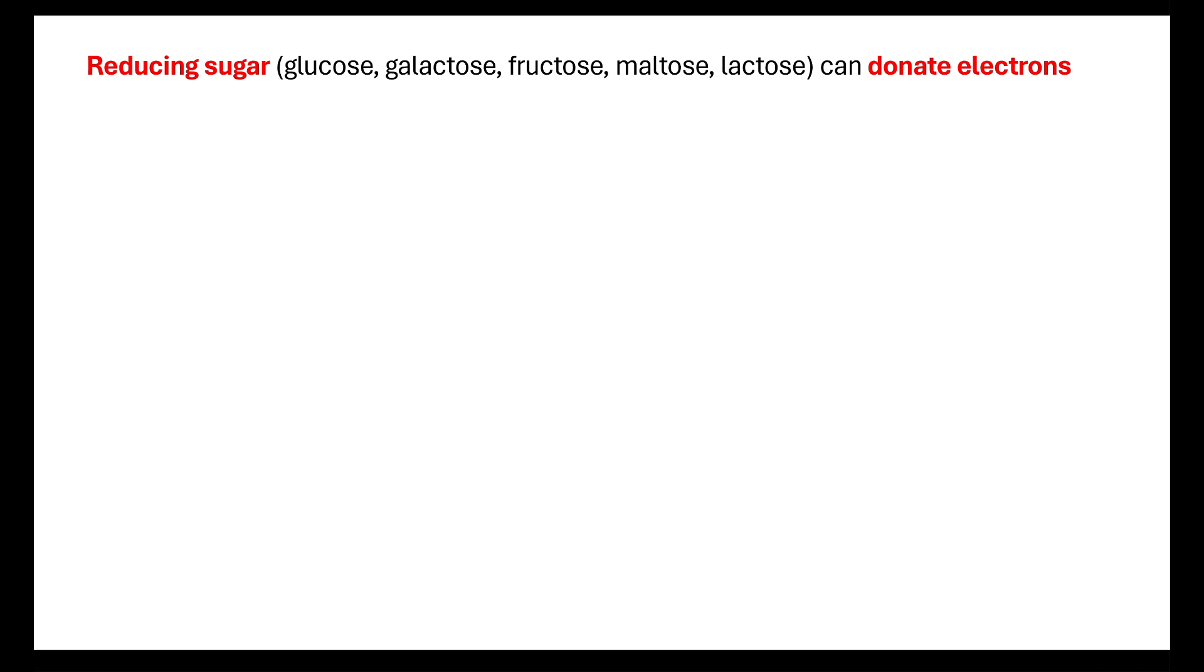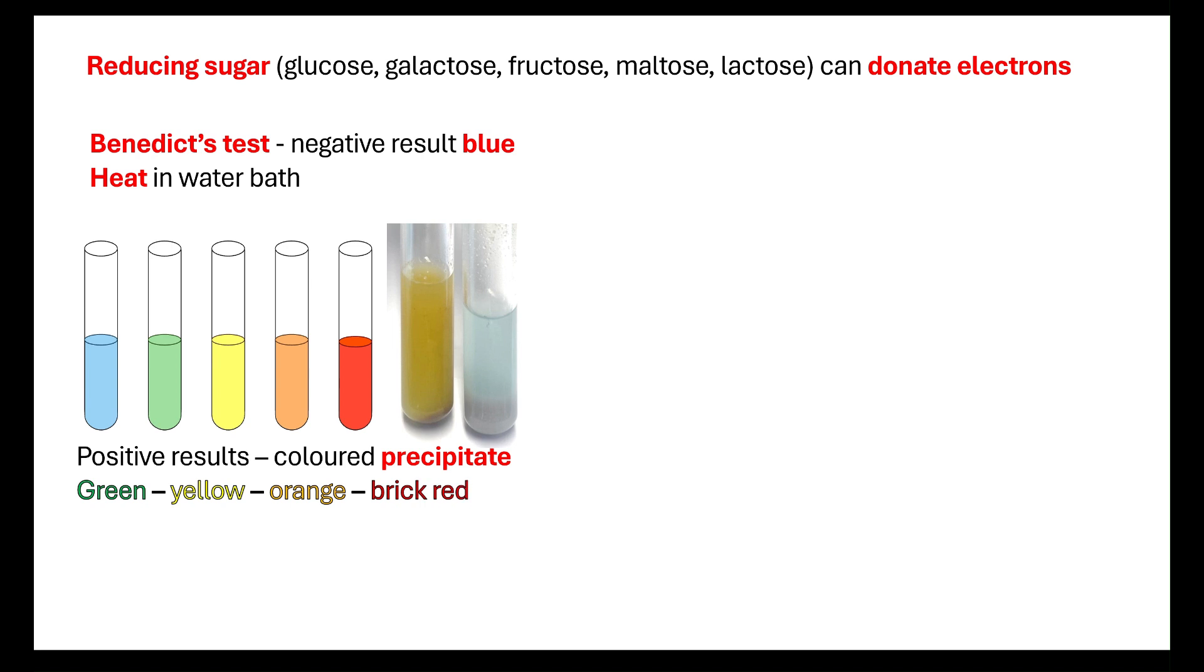Let's remind yourself why we would use Benedict's solution. If we're going to do a reducing sugar test, if we want to see if there's glucose, galactose, fructose, maltose or lactose present in a solution, we're going to do what's known as the Benedict test. The reason we use the Benedict test is because reducing sugars can donate their electrons.